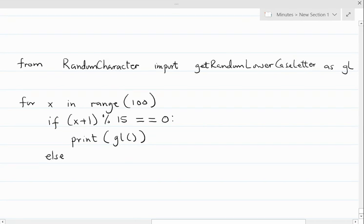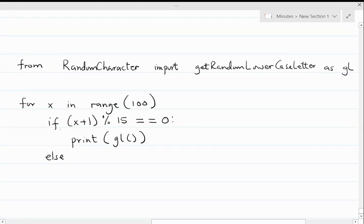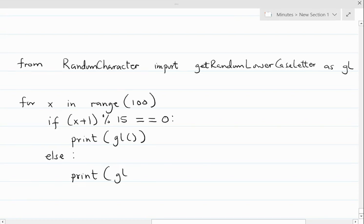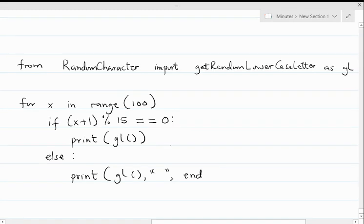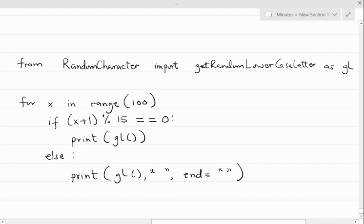Else we would want to stack it together on the same line, so use the print gl. Then this is optional: if you want one character space between all the random characters, then you can place in this. So the only thing that changes is to use end with a quote and a space in the quote.